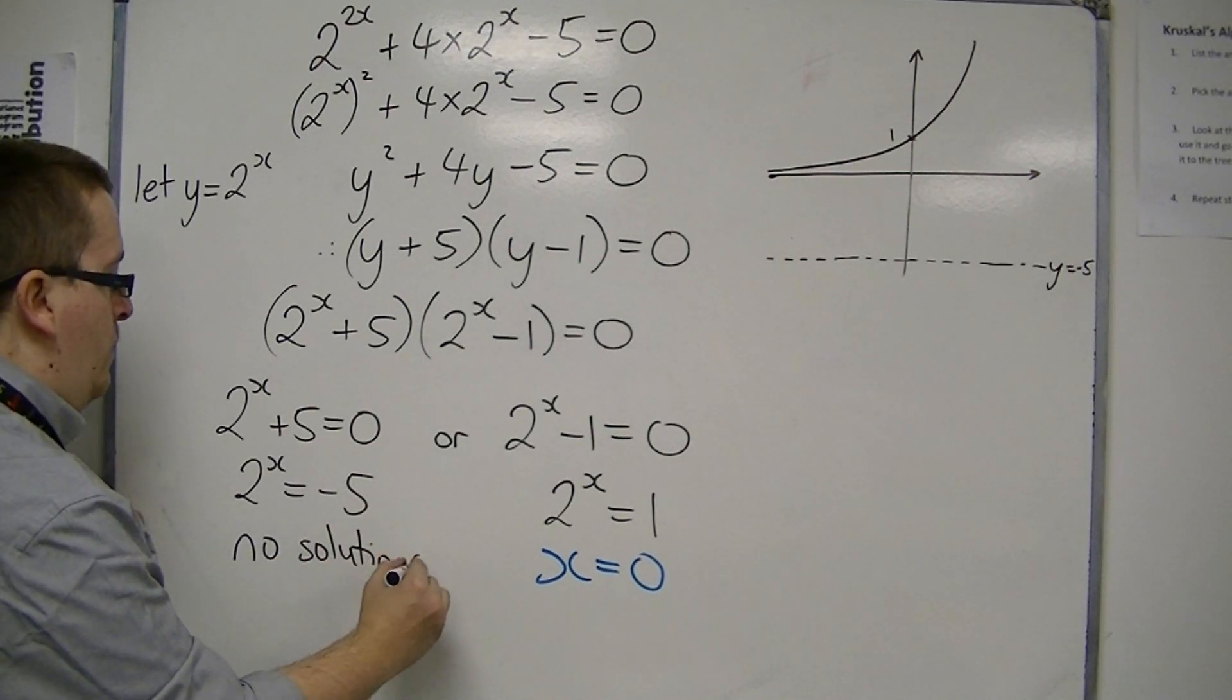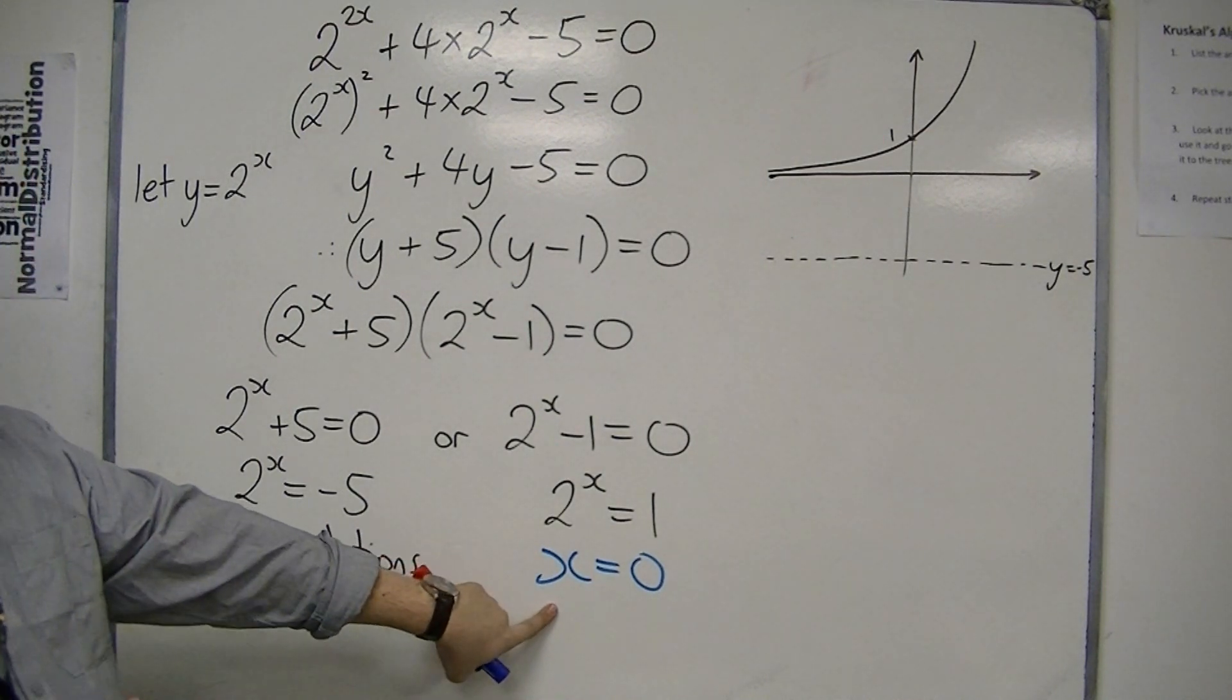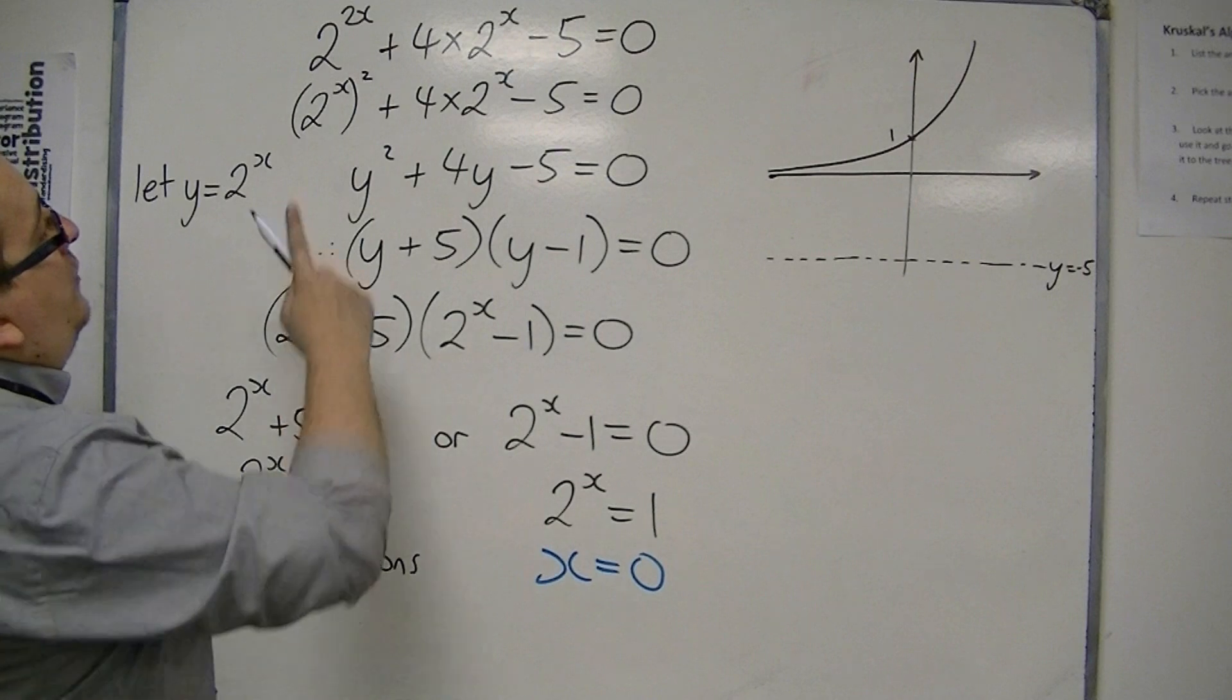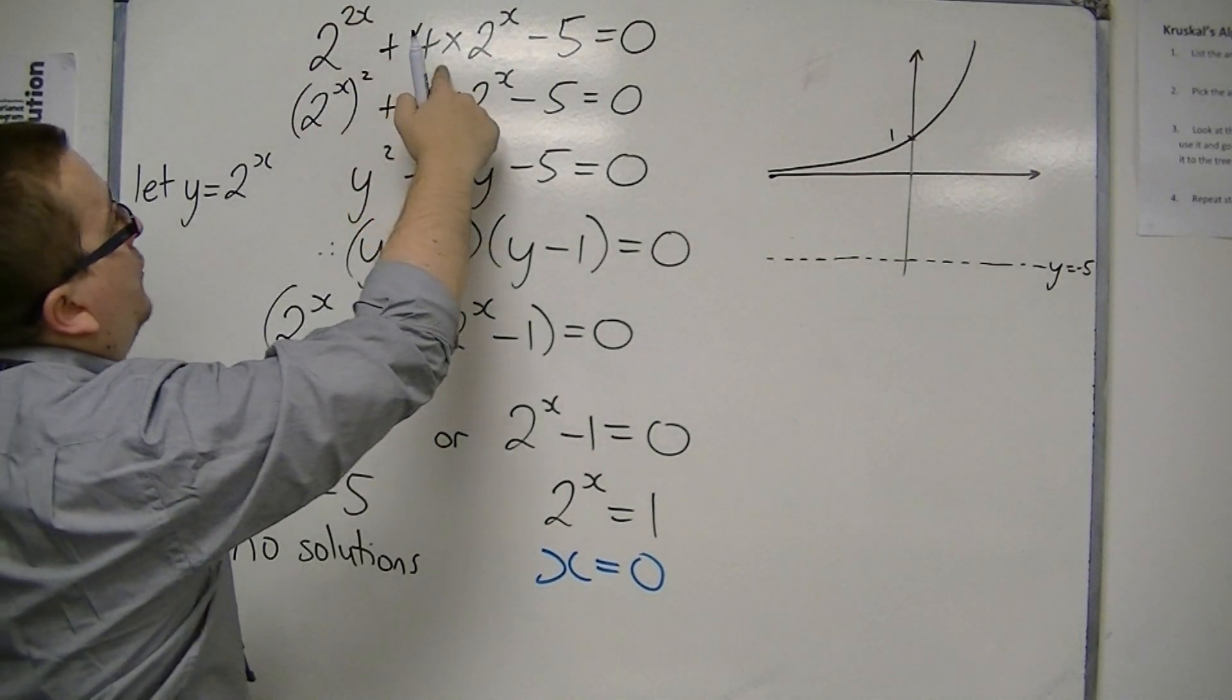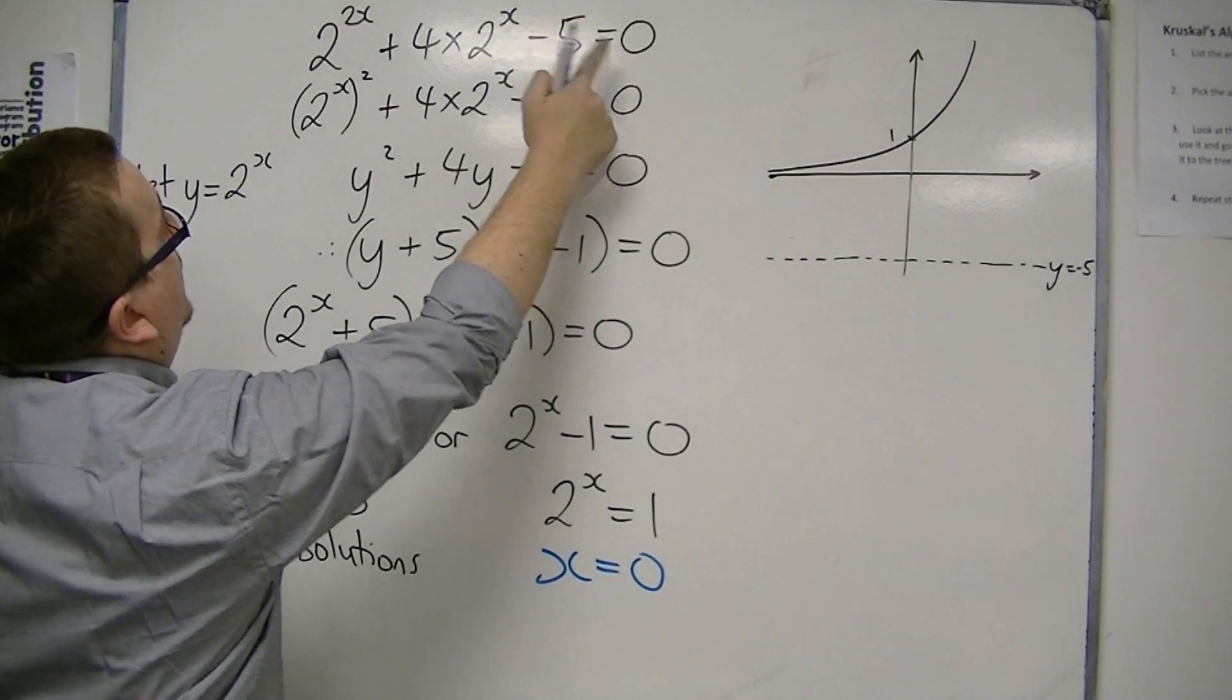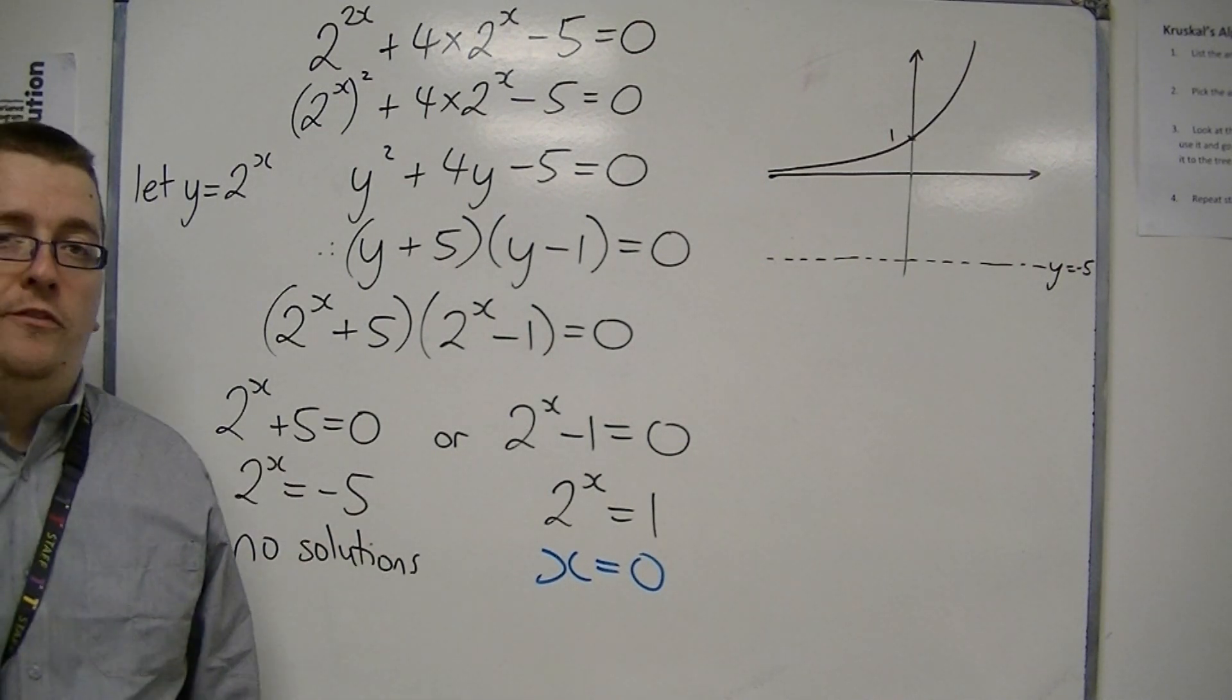And so the only solution to the original problem is x equals 0. Which kind of makes sense, because you would have 2 to the 0, which is 1, plus 4, take away 5, is 0. So you can clearly see that that one works. But this is a case of no solutions, and you must be able to identify that.